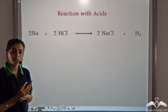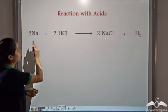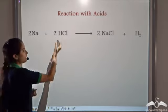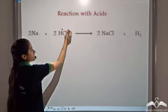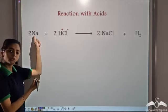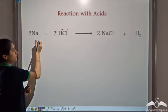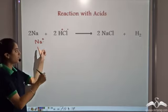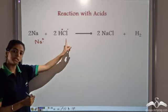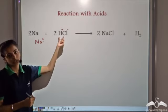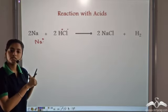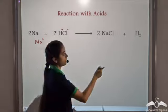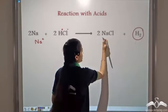Now if you look at the reaction of metals with acids — sodium reacts with HCl. In HCl, we have H⁺ and Cl⁻, and Na usually exists as Na⁺. Unlike charges attract, so Na reacts with Cl to form NaCl, and hydrogen gas is released. So when metals react with acids, they release hydrogen gas and form a salt.